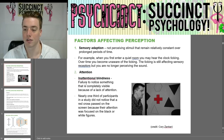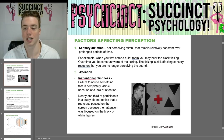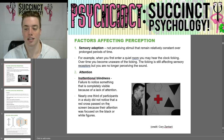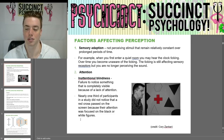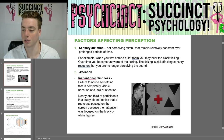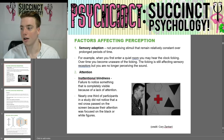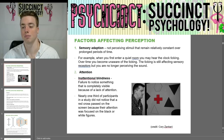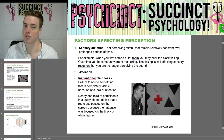Next we have attention. Inattentional blindness is the failure to notice something completely visible because of a lack of attention. In a study, nearly one-third of participants did not notice that a red cross passed on screen because their attention was focused on the black or white figures. If it was a screen scrolling past you with nothing but black and white figures, you might not notice the red cross because it's not the focus of your attention.